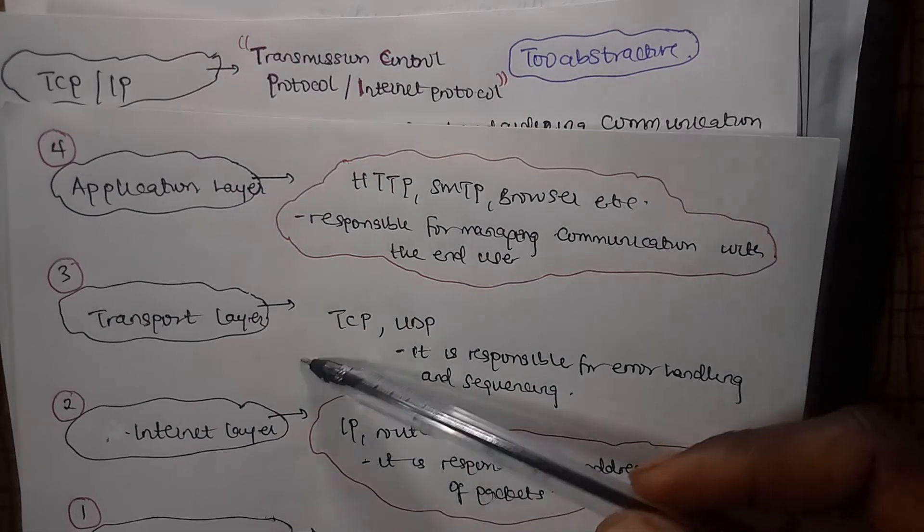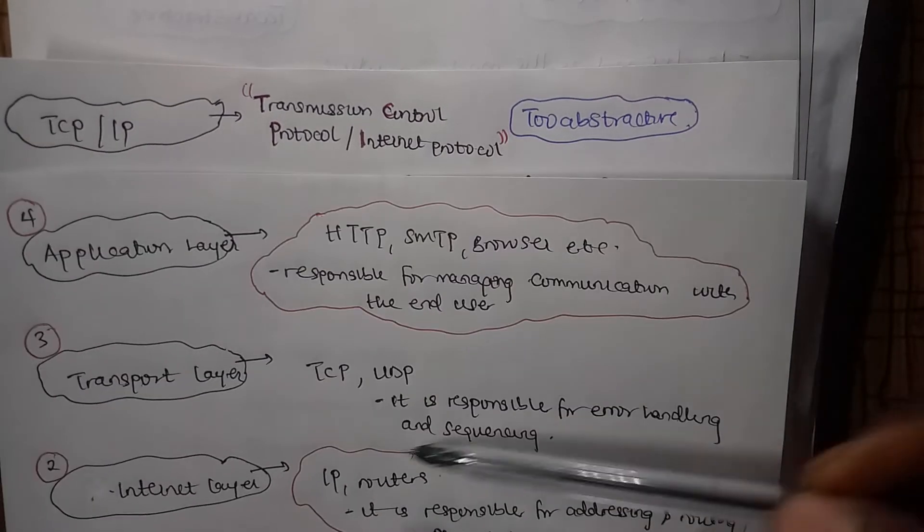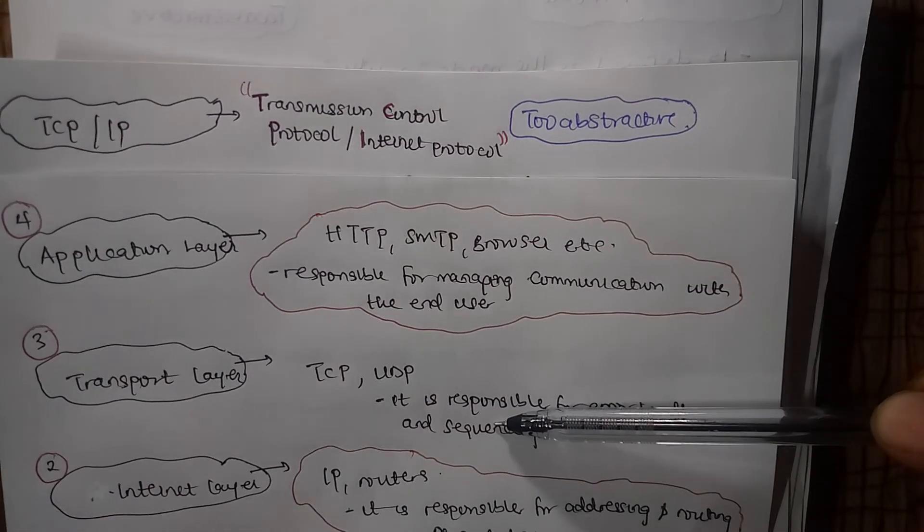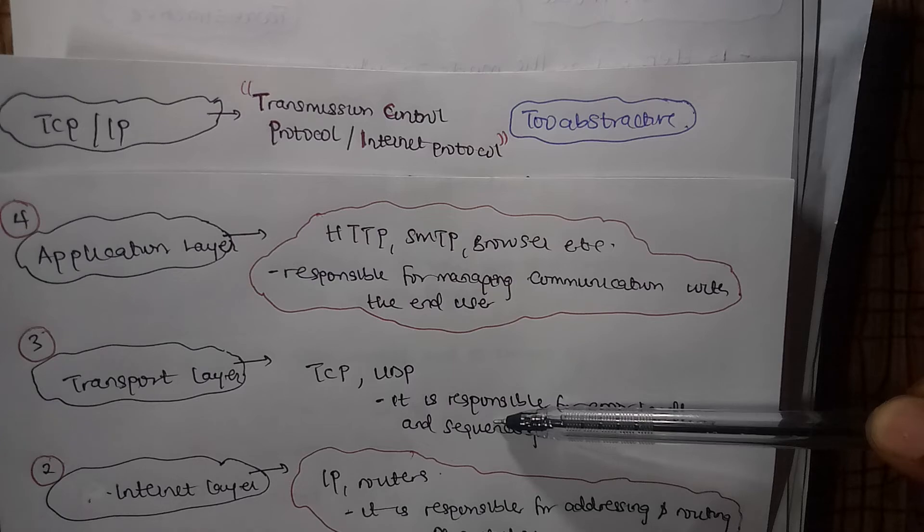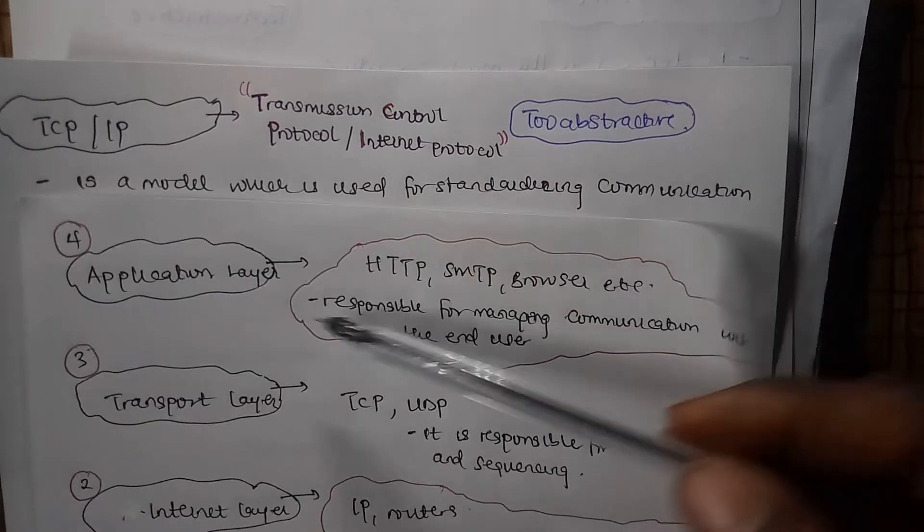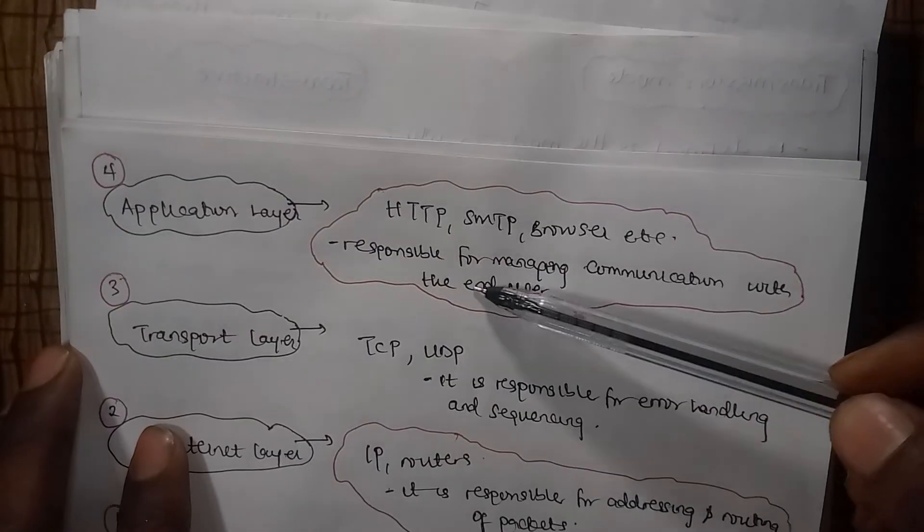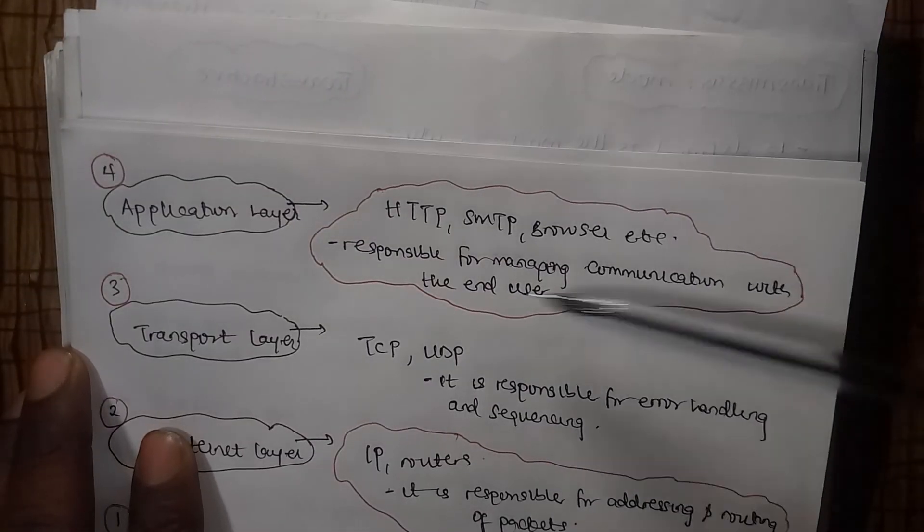Likewise, the transport layer is responsible for error handling and sequencing. If there is a missing packet, it is responsible for sending an acknowledgment and saying some packets are missing. And the application layer, which we said earlier, is responsible for managing communication with the end user.